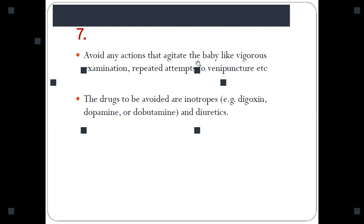Seventh, you should avoid any action that agitates the baby. If the baby is irritable or irritated, it may lead to increased catecholamine release, and these catecholamines can cause increased contractility of the infundibulum and the heart, thus causing infundibular spasm. Drugs to be avoided are inotropes like digoxin, dobutamine, and adrenaline.